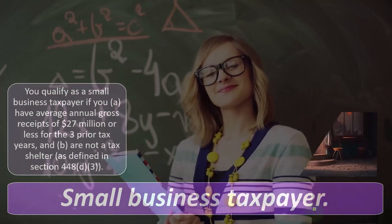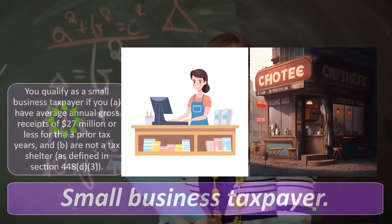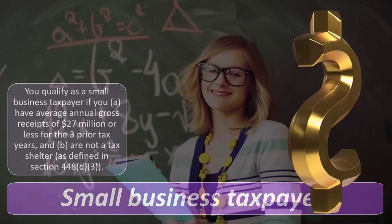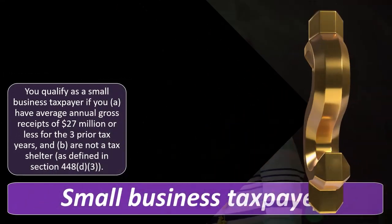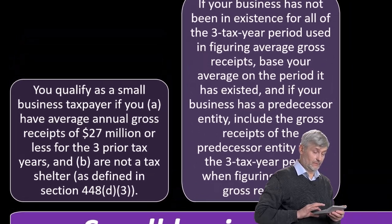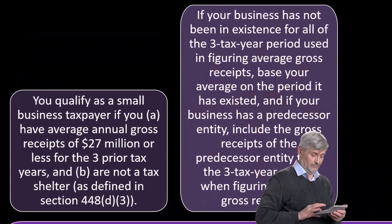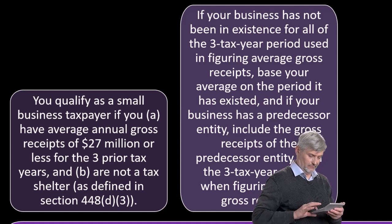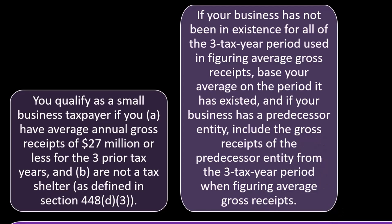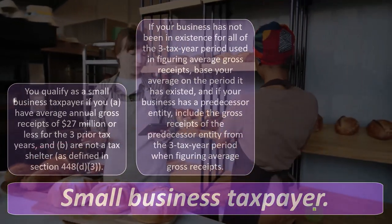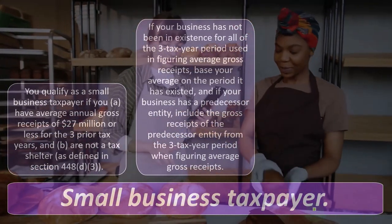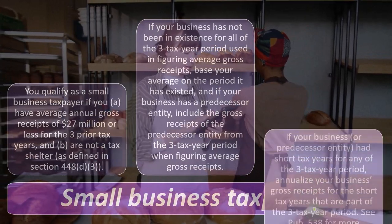You qualify as a small business taxpayer if you: (A) have average annual gross receipts of $27 million or less for the three prior tax years, and (B) are not a tax shelter as defined in section 448(d)(3). If your business has not been in existence for the full three-year period, base your average on the period it has existed. If your business has a predecessor entity, include the gross receipts of the predecessor entity from the three-year period when figuring average gross receipts.